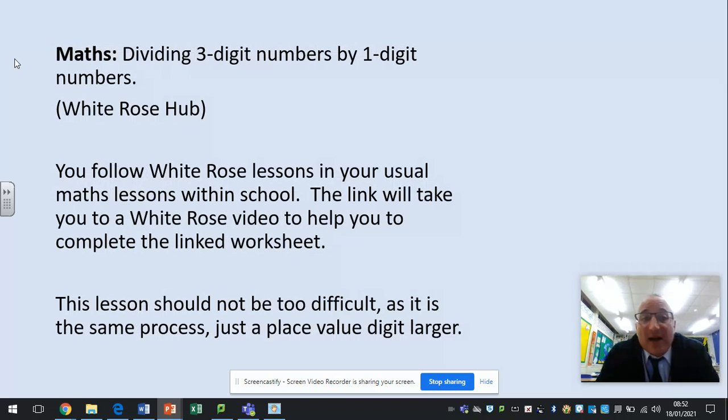So maths this time, we're dividing three digit numbers by one digit numbers. So it's very similar to what you've just been doing in the last four maths lessons, except you are now an extra digit bigger. Again, follow the White Rose lesson video and the associated task sheet that goes with it.